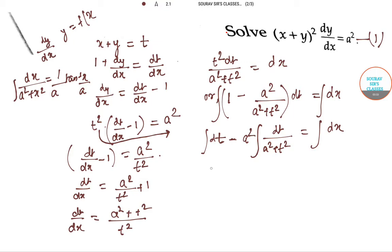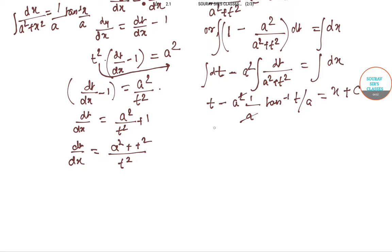The integration of dt/(a² + t²) is (1/a) tan⁻¹(t/a), and the integration of dx is x + c. So we are left with t − (1/a) tan⁻¹(t/a) = x + c.